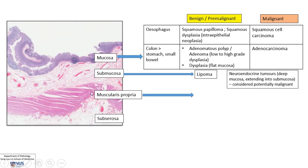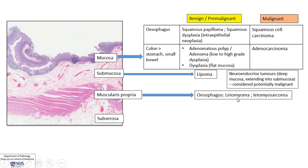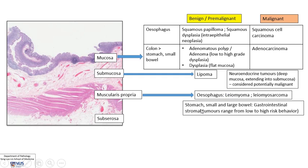Moving into the deeper zone in the muscularis propria, the esophagus is a little different from the rest of the gut. The most common tumor arising in the muscular layer is the benign smooth muscle tumor known as leiomyoma. Very rarely, we can have malignant ones — leiomyosarcoma. Interestingly, in the rest of the gut, the most common stromal tumor arising within the muscularis layer or sometimes in the submucosa is the gastrointestinal stromal tumor, also known as GIST.